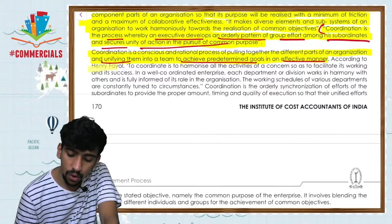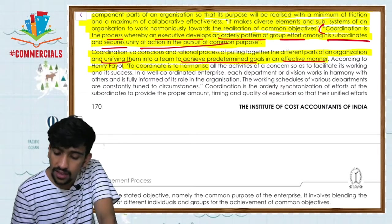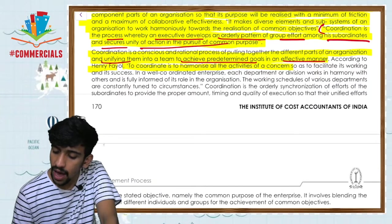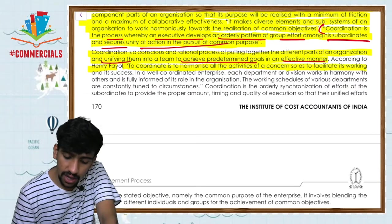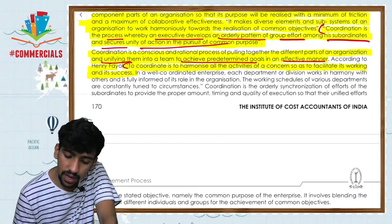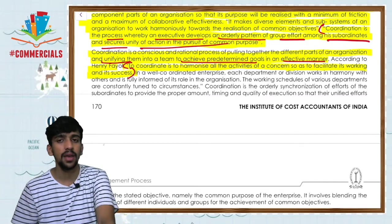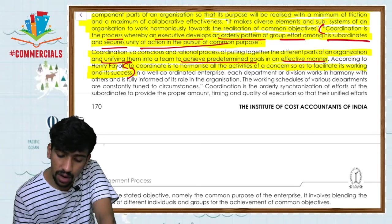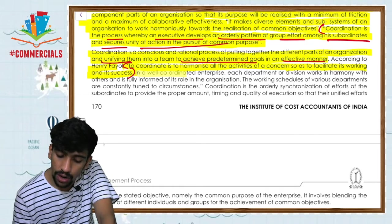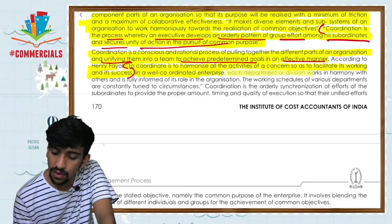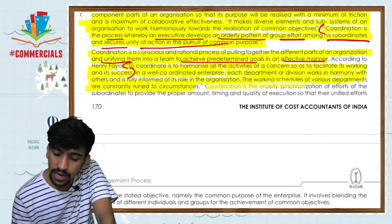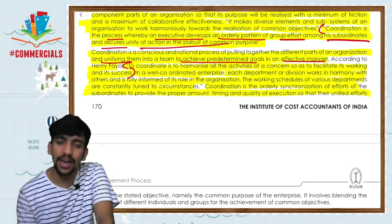According to another definition, coordination means to harmonize all the activities of a concern so as to facilitate its working and its success — to work in harmony with others and fulfill the informational role. A well-coordinated organization has good coordination under every department.